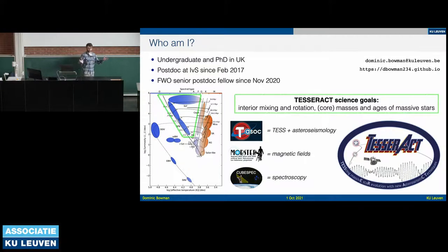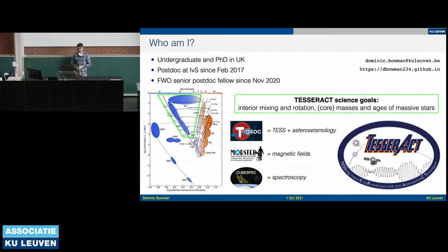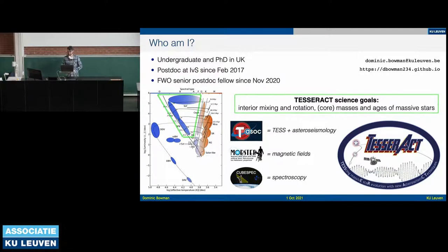Given that there are a lot of new faces in the room, I wanted to give a little introduction. I'm Dominic. I did my undergrad at Birmingham in the UK, then my PhD with Don Kurtz at University Central Lancashire. I came here in 2017 as a postdoc and have been here ever since. In November 2020 I got an FWO postdoc — my project called Tesseract — hopefully Disney won't mind me replicating the font.